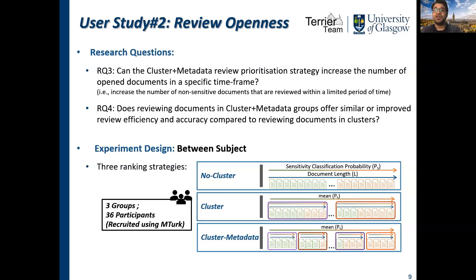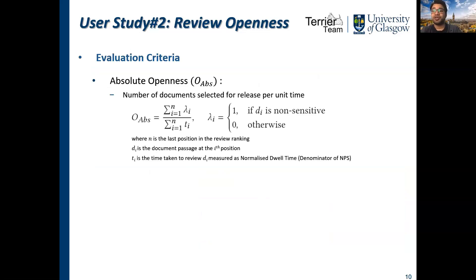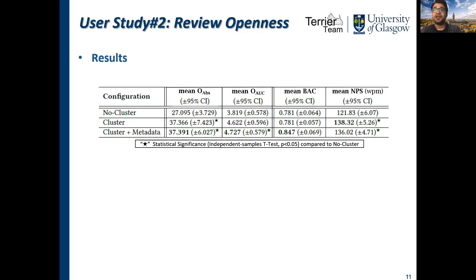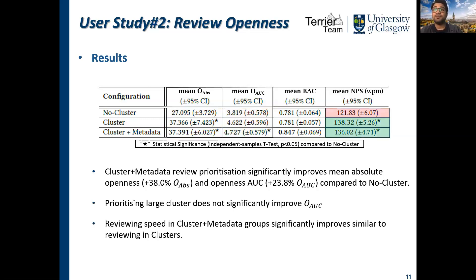Corresponding to the three test conditions, we created three participant groups and recruited 36 participants using MPERC. In this study, we use a single set of 20 passages, including five sensitive passages. To evaluate openness, we deploy two metrics: absolute openness — that is, the number of documents selected to be opened per unit time — and openness area under the curve, which measures the number of documents selected to be opened as a function of time. We found that the cluster-plus-metadata review prioritization approach significantly improves absolute openness and openness area under the curve compared to ranking documents without clusters, while prioritizing large clusters does not significantly improve openness area under the curve. Moreover, the cluster-plus-metadata approach shows similar improvements in reviewing speed as provided by reviewing documents in semantic clusters.